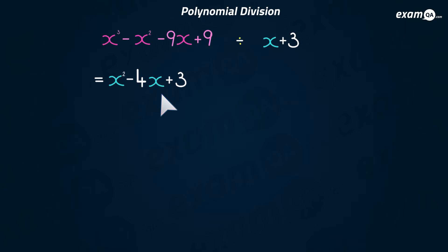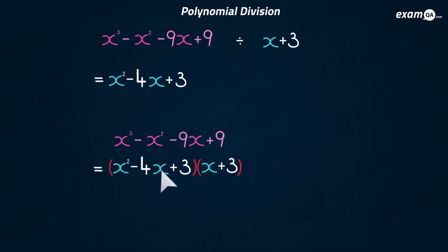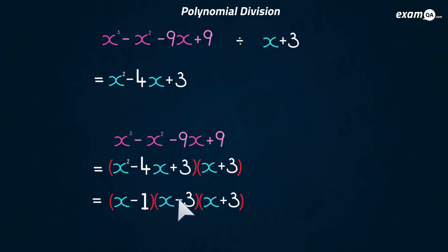Something extra which is good to know: we can now factorize the expression we divided. Since we've done the division, this expression can be written as the answer multiplied by x plus three. That's quite nice because we've nearly factorized the expression. One of the brackets has a quadratic in it, and if you factorize that quadratic further, we've managed to factorize the expression into three brackets — three factors of the expression.